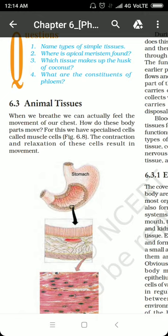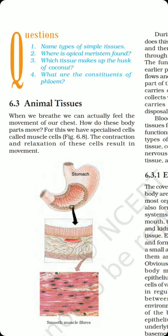Permanent tissues have been assigned a specific function and location in the plant body. Once mature and differentiated, they have lost their ability to divide. They are originally produced by meristematic tissues. Permanent tissues are further divided into simple permanent tissues — like parenchyma, colenchyma, and sclerenchyma — and complex permanent tissues, which include xylem and phloem.